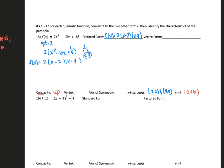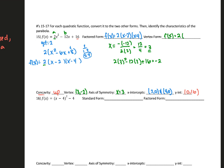Now converting to vertex form. We find the vertex using negative b over 2a: negative(negative 12) over 2 times 2 equals 12 over 4 equals 3. So the axis of symmetry is x equals 3. Plugging 3 in for x to find the y value, we get negative 2. So the vertex is at 3, negative 2. Writing it in vertex form using the same a value of 2: f(x) = 2(x minus 3) squared minus 2.